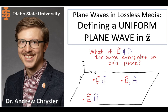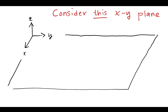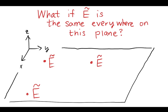That uniform plane wave is kind of the same thing as asking ourselves: what if we had a plane on x and y where E and H, the electric and magnetic field, were the same everywhere on that plane? So let's get started on this uniform plane wave question by considering some x, y plane. We're going to start with just the electric field and say, what if the electric field is the same everywhere on the plane? If the electric field is the same everywhere on that plane, that means each of the directional components — x, y, and z — would also be the same everywhere on that plane.